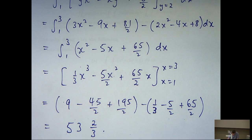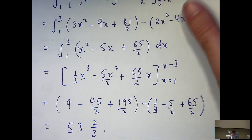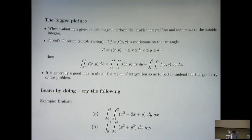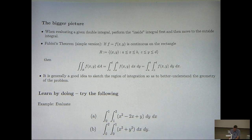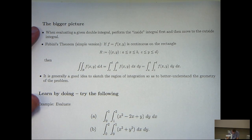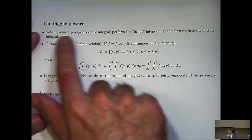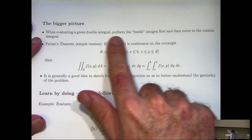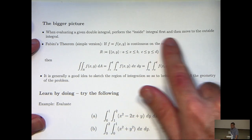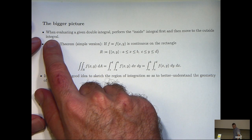So we have solved our problem. But let's have a look at the bigger picture. The first general point is about method: when you're evaluating a given double integral, perform the inside integral first, and then move to evaluate the outside integral.